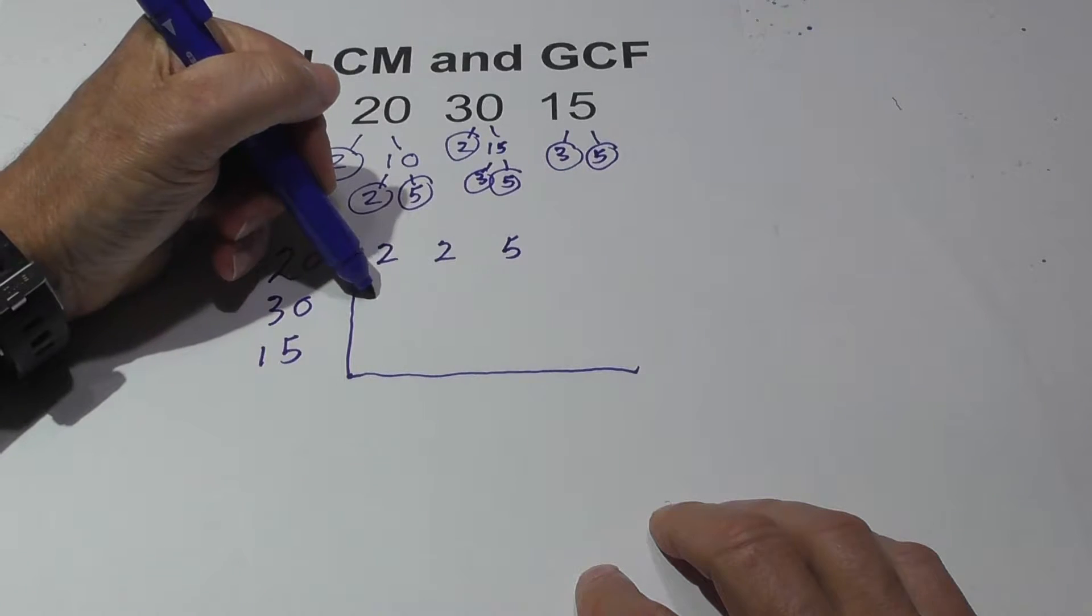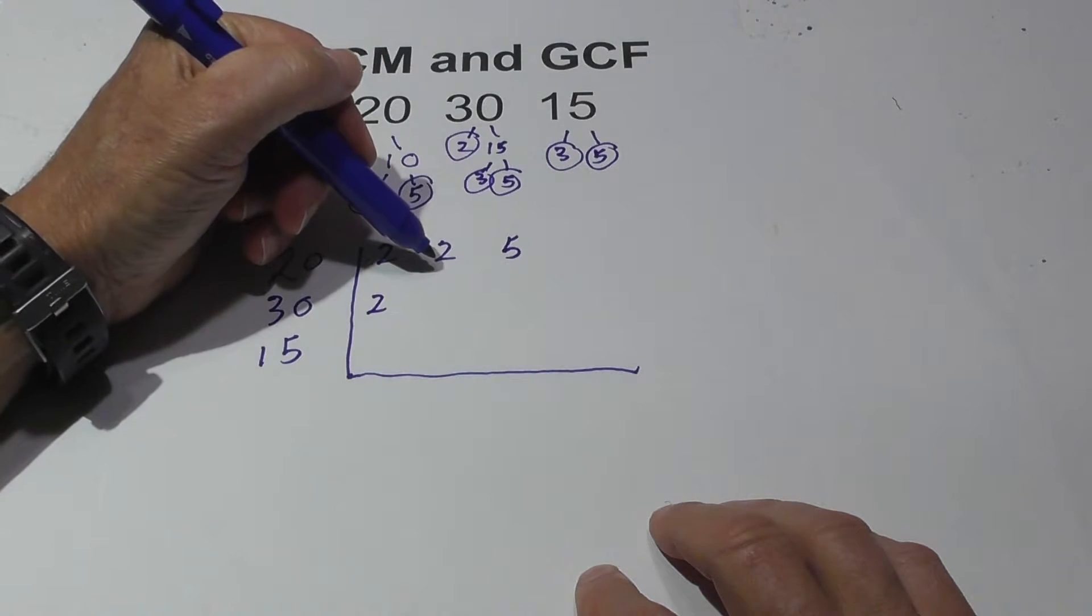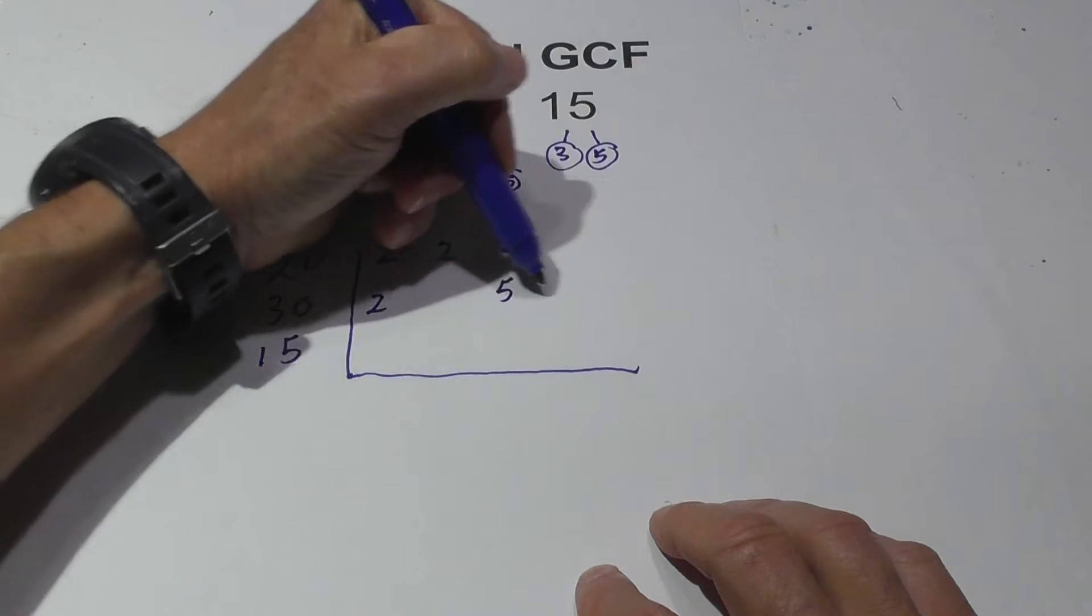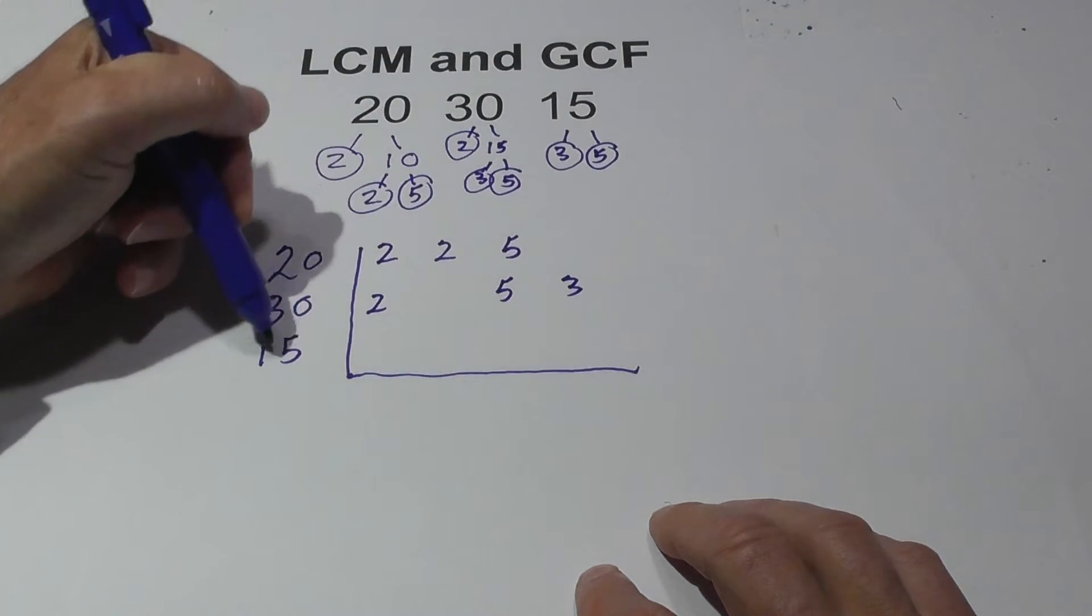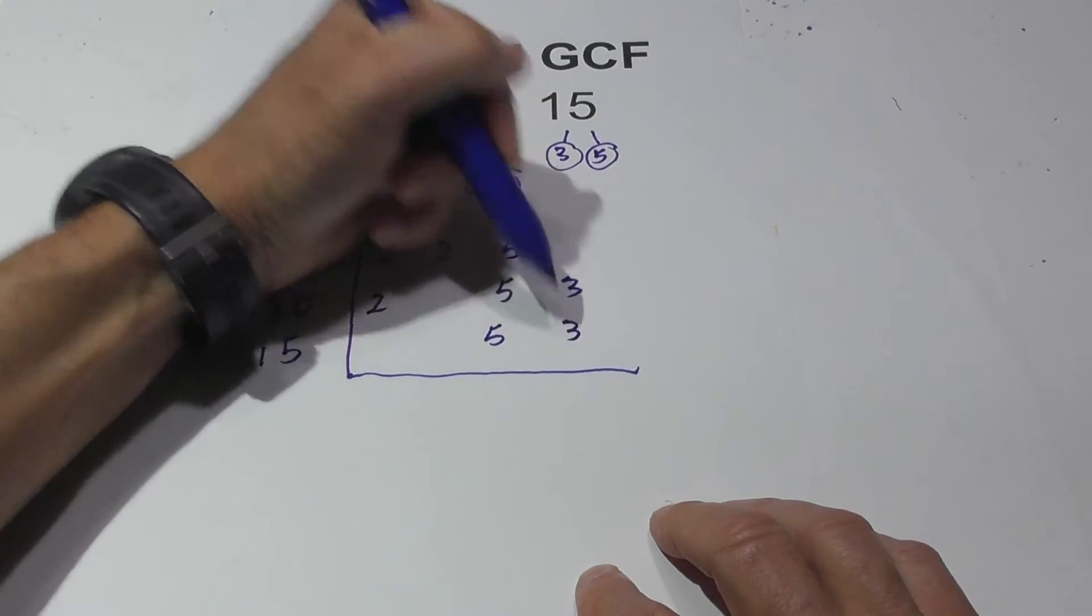And now for 30, I'm going to go 2, I don't have another 2, but I have a 5, I'm going to write the 5 there, and the 3 here. This will make sense in just a minute. And for 15, I'm going to go 3 and 5.